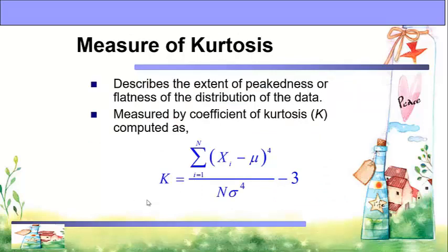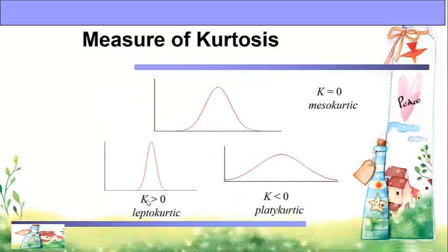Measure of kurtosis describes the peakedness or flatness of the distribution of data. This is measured by the coefficient of kurtosis K, computed as: K equals the summation of (x minus mu) to the 4th power, divided by n times sigma to the 4th, minus 3. There are three types: when K equals 0, it is mesokurtic; when greater than 0, it is leptokurtic; and when less than 0, it is platykurtic.